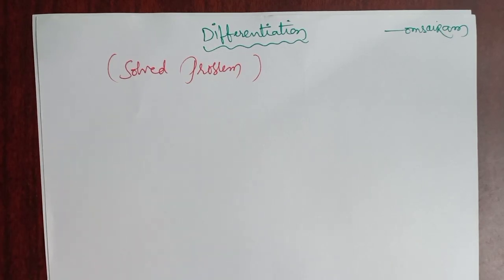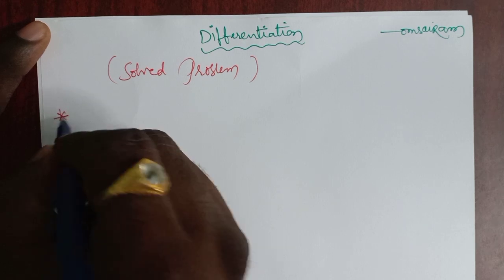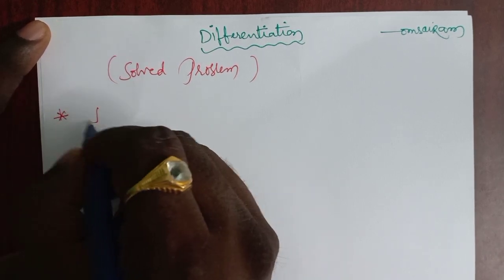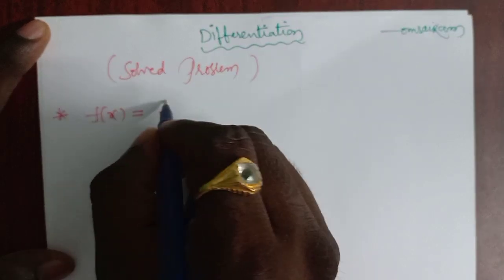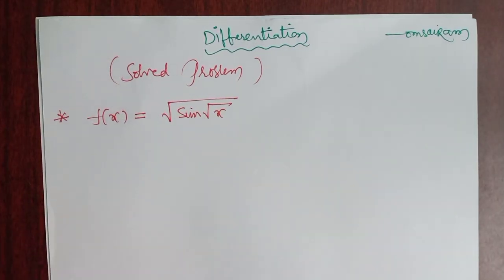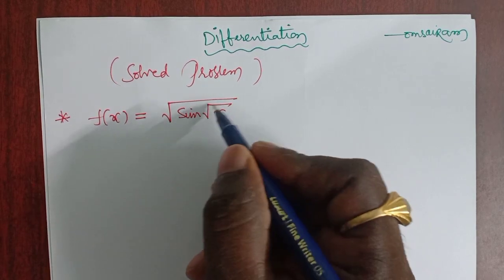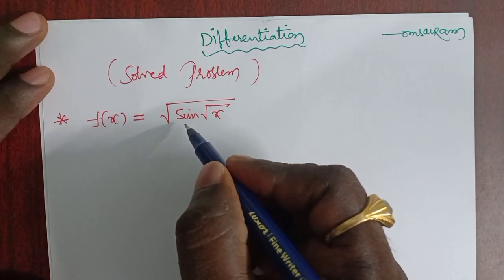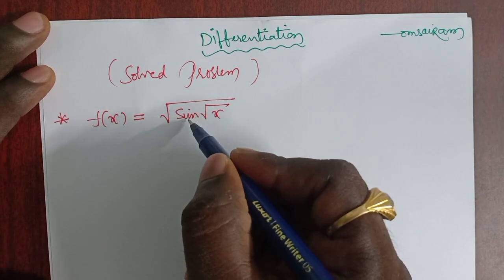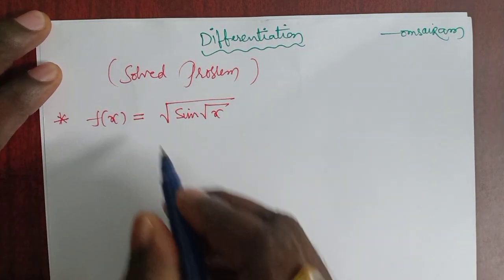Hi students, today we will solve some problems based on types of differentiation. The first one is formula-based. Suppose f(x) = √(sin(√x)). This is a composite function because under the root we have sin, and in place of x we have √x. So here we have three functions: √x, sin x, and √x.